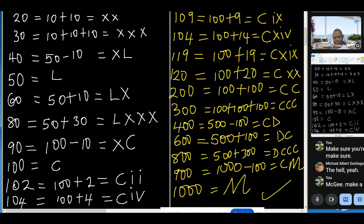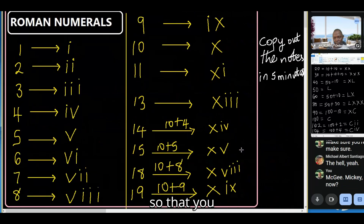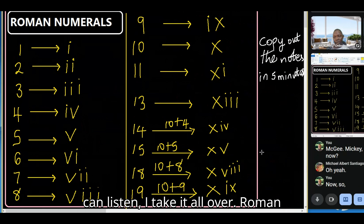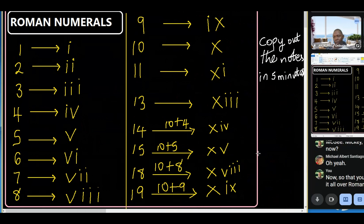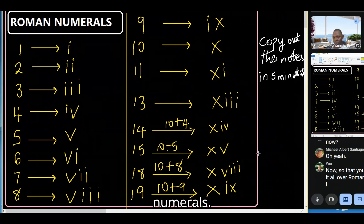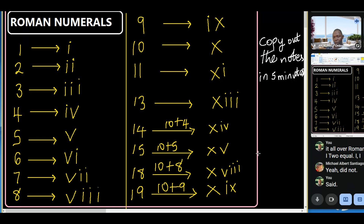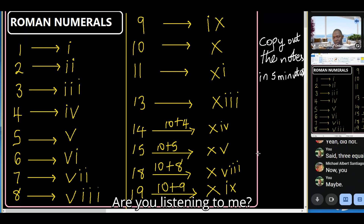Migi, can you hear me? Let me take it all over. Roman numerals: one is I, two is II, three is III.